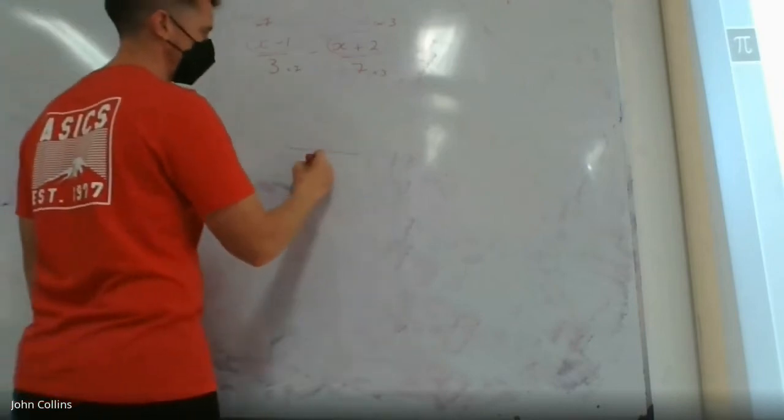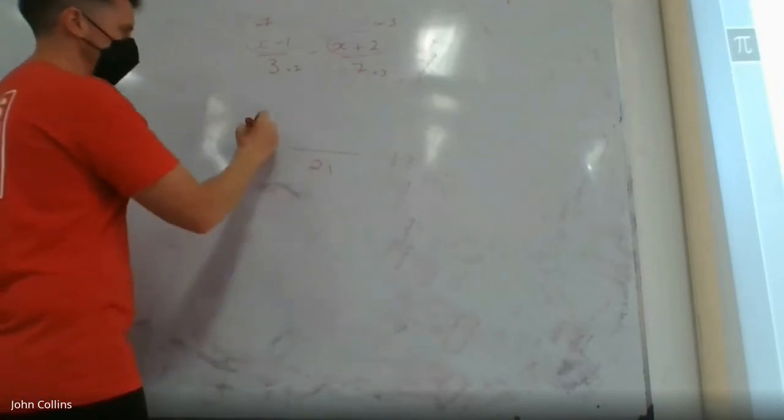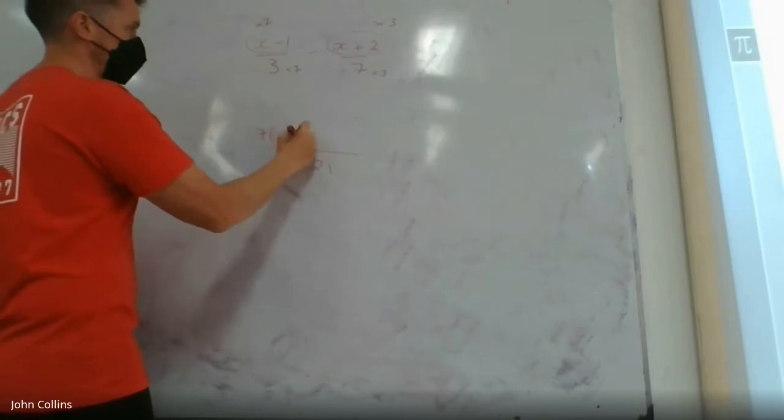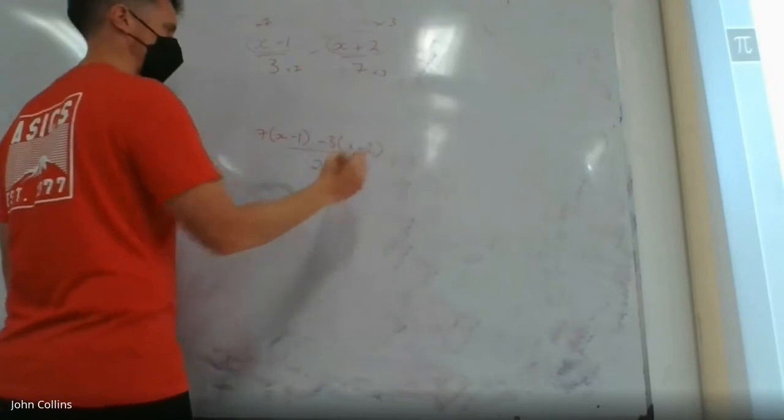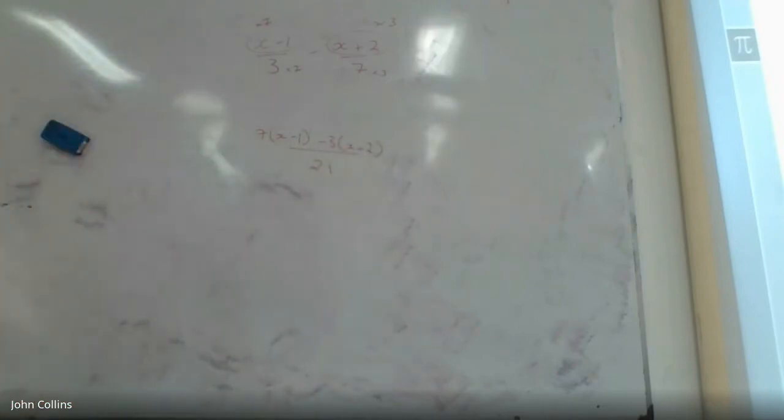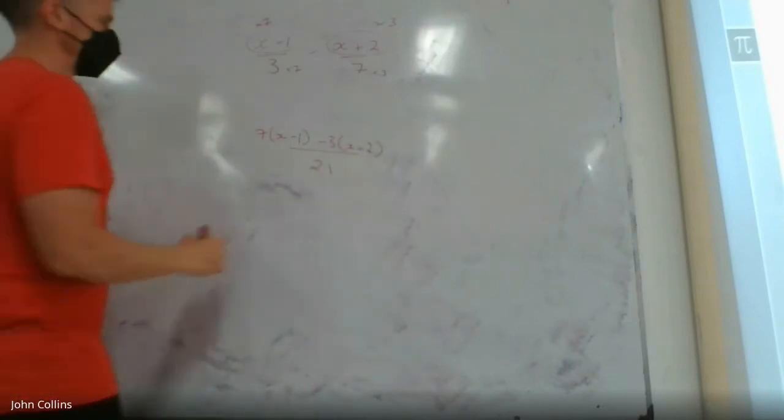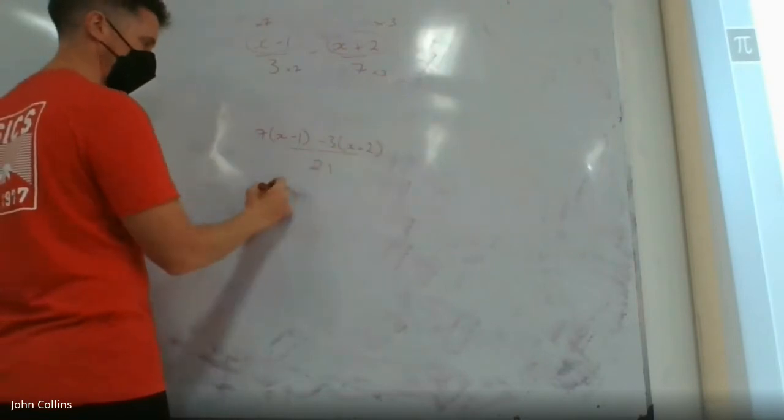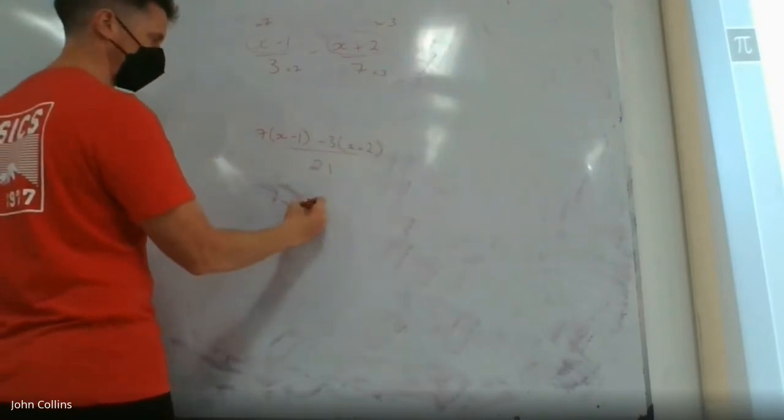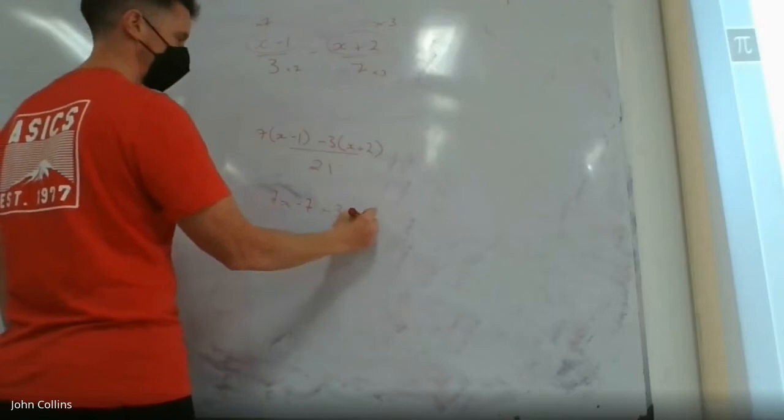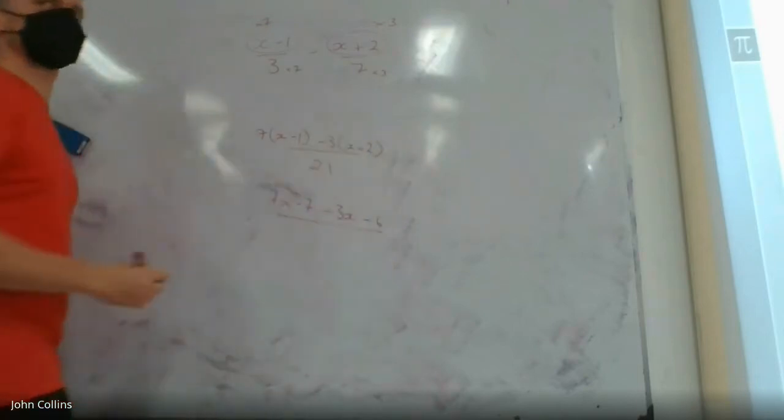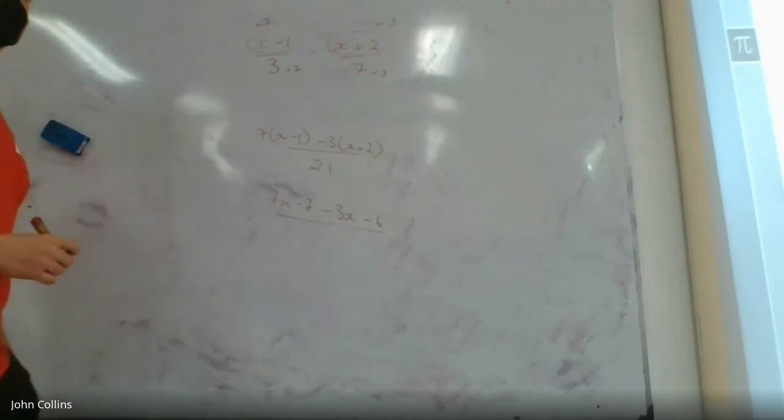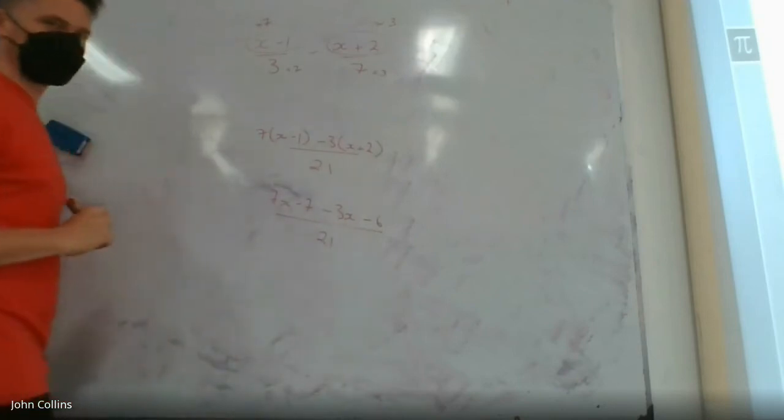I'm going to write it all over 21. I'm going to do the same step as I did the last time, the slower step. Multiply by 7, so 7x minus 7, minus 3x, minus 6. Because that minus applies to both, and I see some people rub out the plus 6 that they wrote. Still over 21.